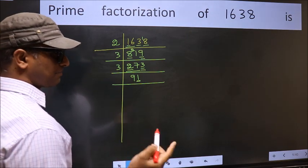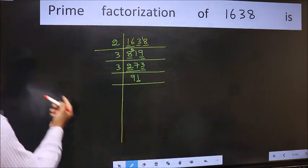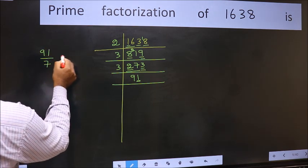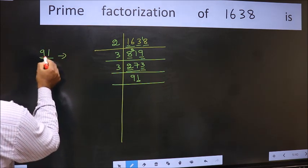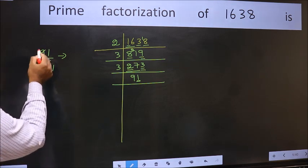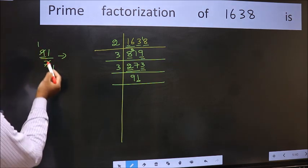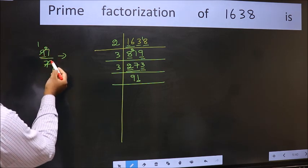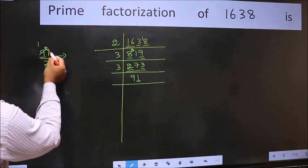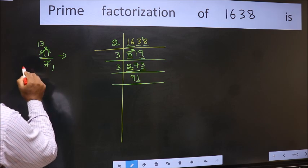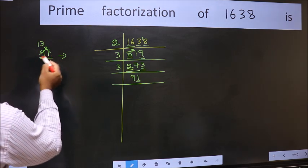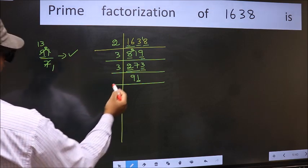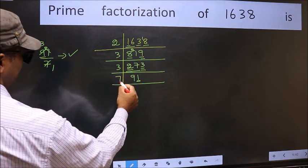Next prime number 7. Let us check divisibility by 7. A number close to 9 in the 7 table is 7 ones are 7. 9 minus 7 is 2, carried forward: 21. When do we get 21 in the 7 table? 7 threes are 21. No number has been left out, so 91 is divisible by 7. So we take 7 here.